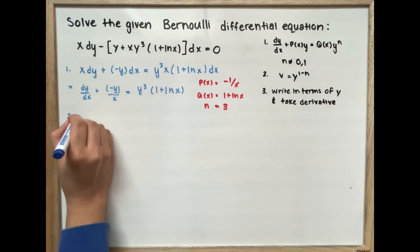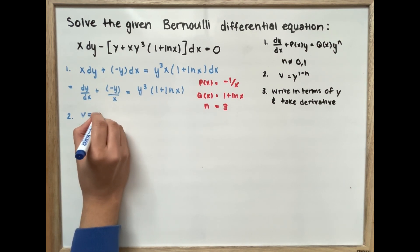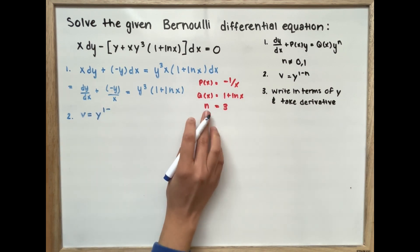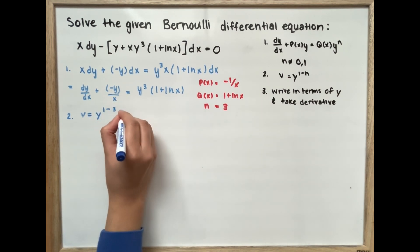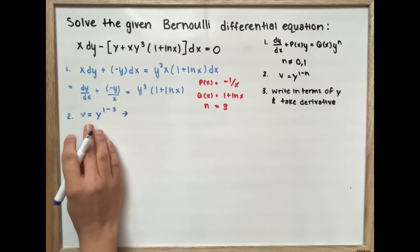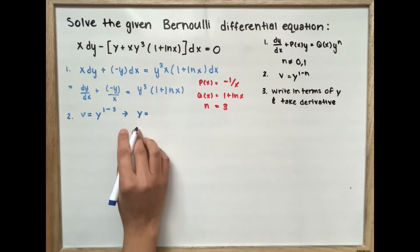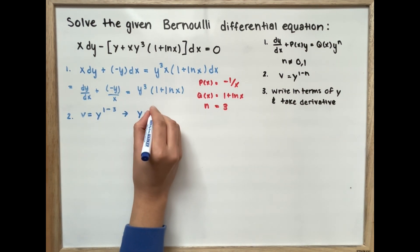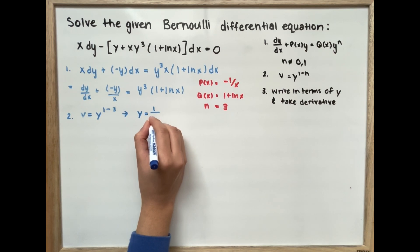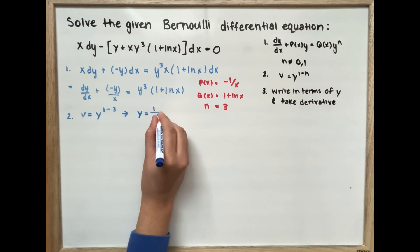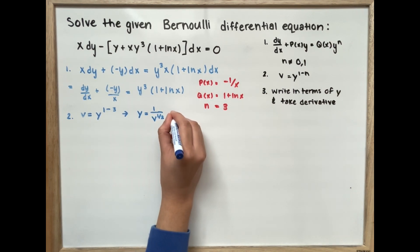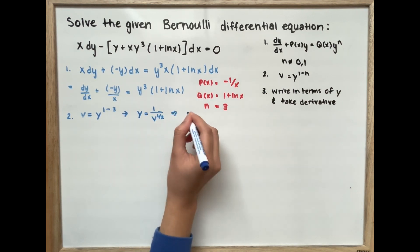Now we're going to set our v equal to y to the power of 1 minus n, which is 3, giving v = y^(1-3) = y^(-2). We write y in terms of v, so y equals 1 over v to the power of one half.